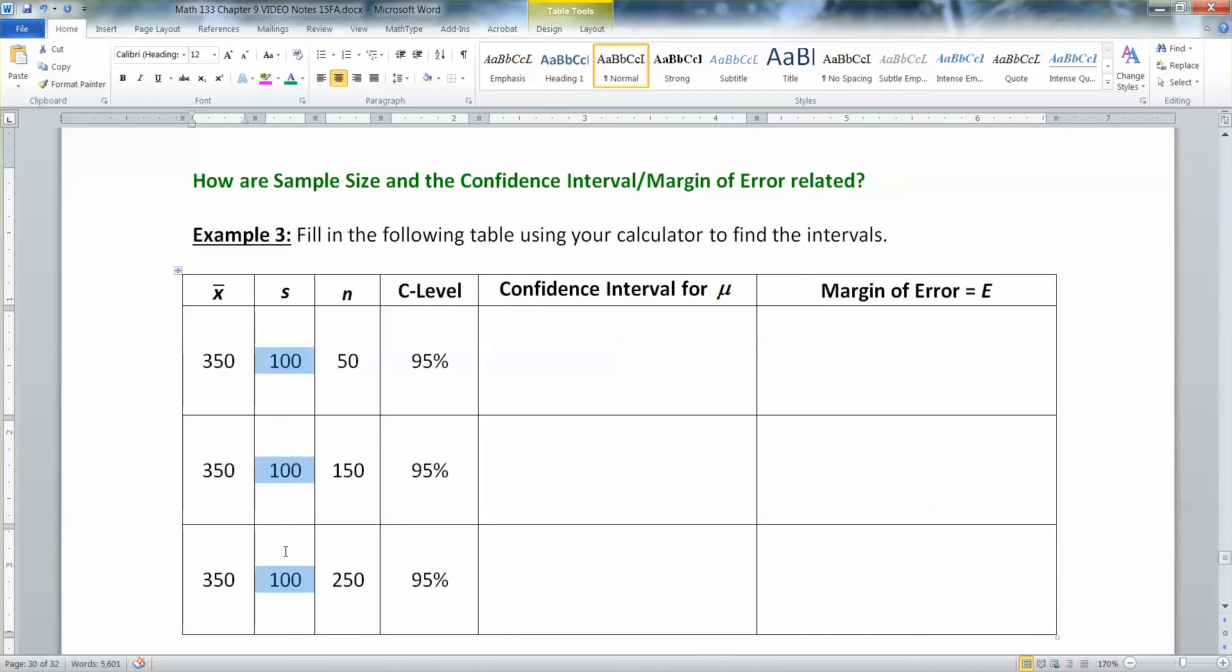So notice X bar is the same. S is the same. Confidence level is the same. What's changing here is my n, my sample size. And I want to see what happens to my confidence interval as I do that.